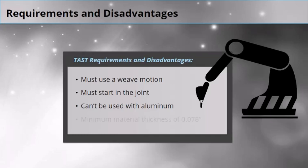And as a final note, TAST must have enough of a recognizable joint and material thickness to create the current change. This requires a material thickness of at least 0.078 inches.